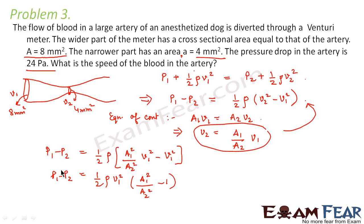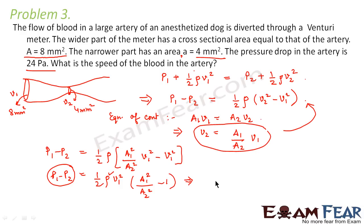In this question, the pressure drop P1 minus P2 is given as 24 Pascals. The density is the density of blood, which is the density of the fluid. V1 is the velocity or speed of the blood which we need to calculate, and A1 by A2 is the ratio of the areas given in the question. With this expression we should be able to find out the value of V1.